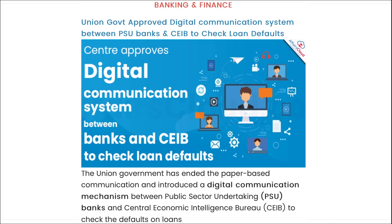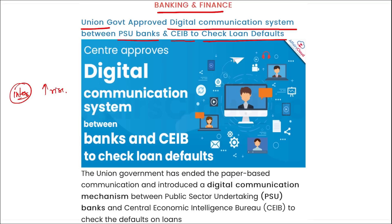Next, banking and finance: the union government approved a digital communication system between PSU banks and CEIB to check loan defaults. In recent months, interest rates on loans have risen — in the US from zero to nearly five percent, and in India from an average of six to seven percent to nine percent plus — increasing monthly EMIs for borrowers.